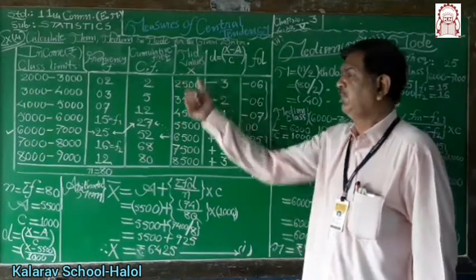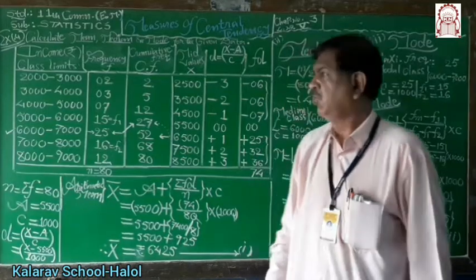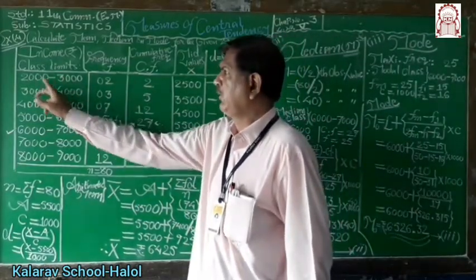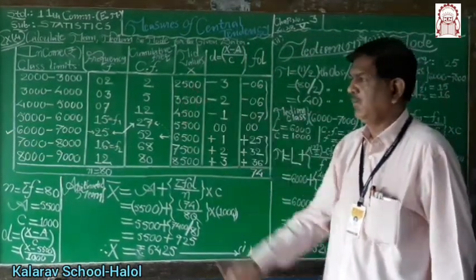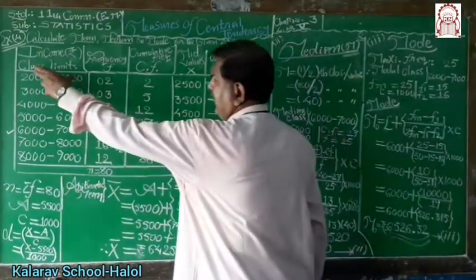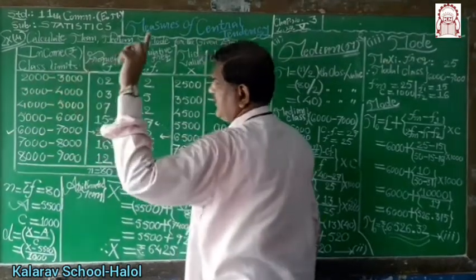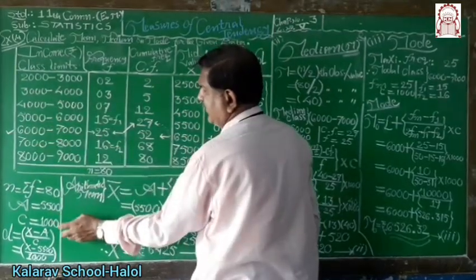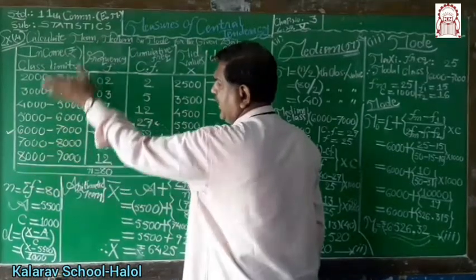Next is the column of mid-value. Mid-value means upper limit plus lower limit divided by 2. Upper limit is 3000, lower limit is 2000, total is 5000 divided by 2 equals 2500. Also note that the class interval for all classes remains the same — equal class interval of 1000.